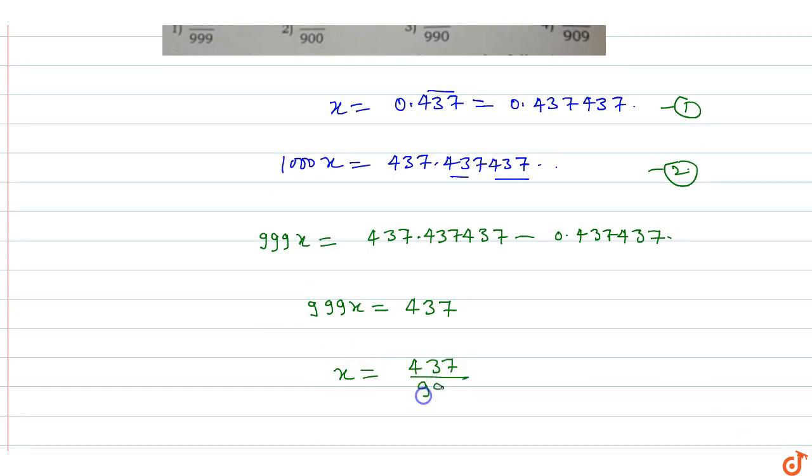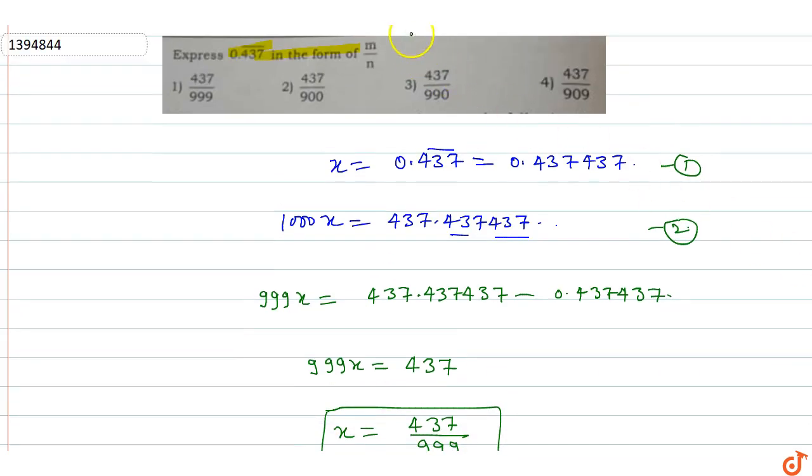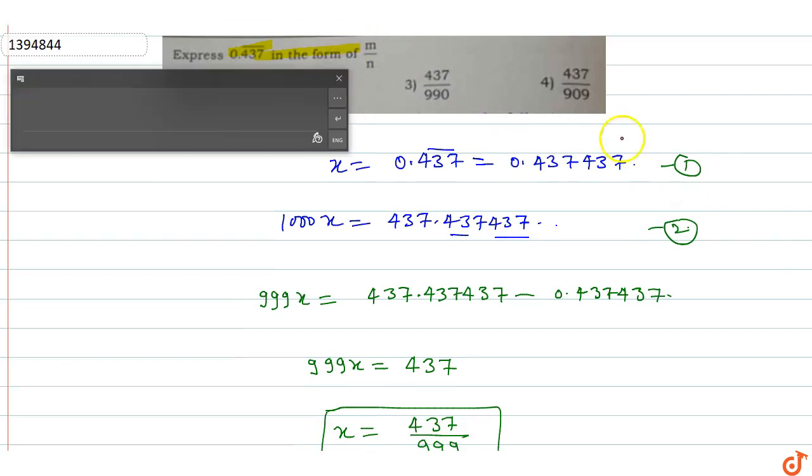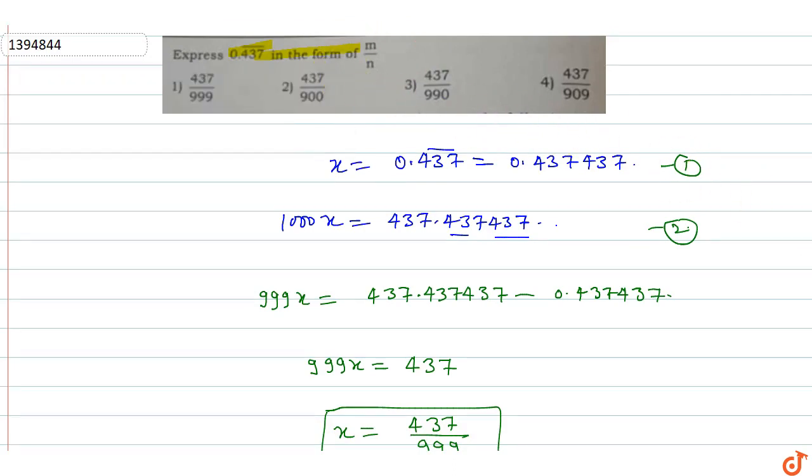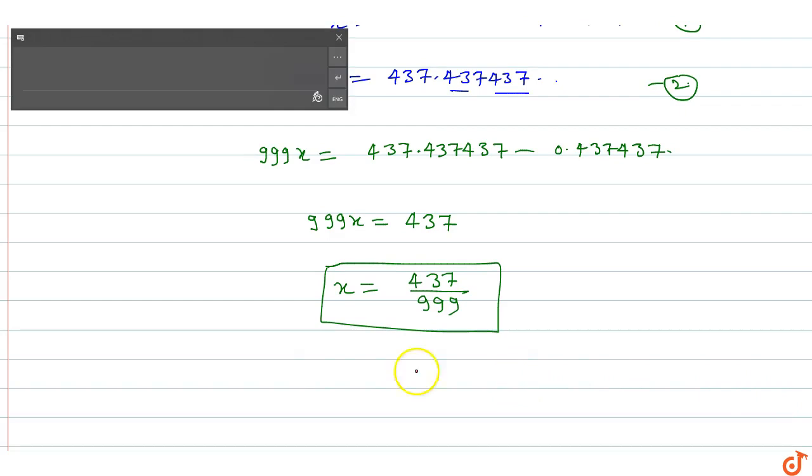divided by 999. This is the value of x in the form m by n, so 0.437 bar in the form m by n is 437 by 999.